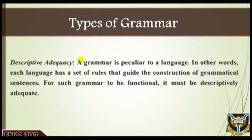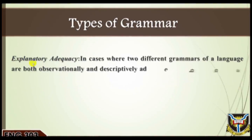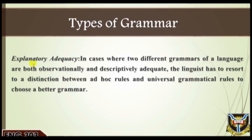Two: descriptive adequacy. A grammar is peculiar to a language — each language has a set of rules that guide the construction of grammatical sentences. For such grammar to be functional it must be descriptively adequate, meaning it must specify an infinite number of sentences that the native speaker can judge as grammatical, as well as the relationships between them. The descriptively adequate grammar must conform to the native speaker's intuition about the language. Thus the linguist extracts the grammar from the language user's competence.